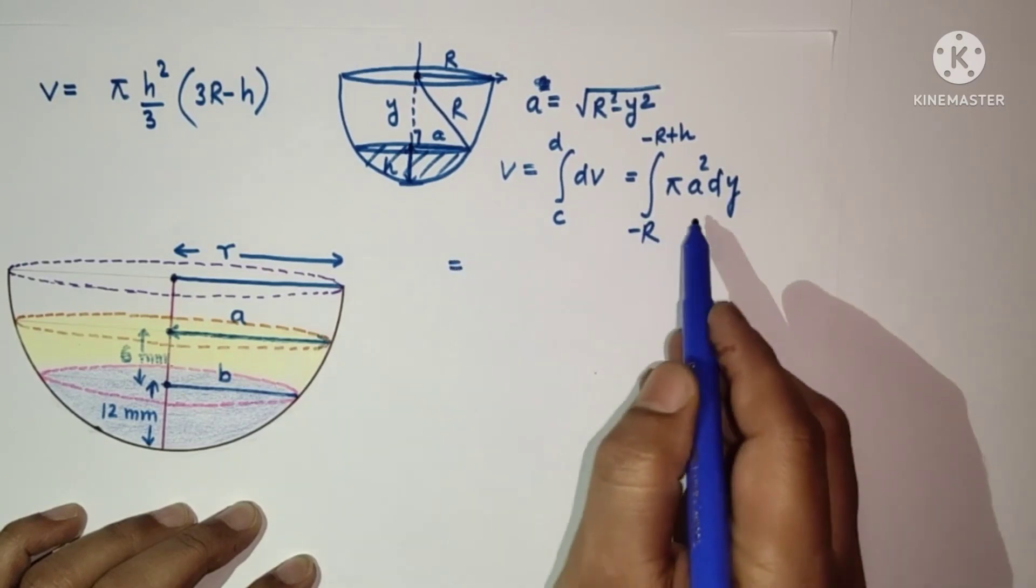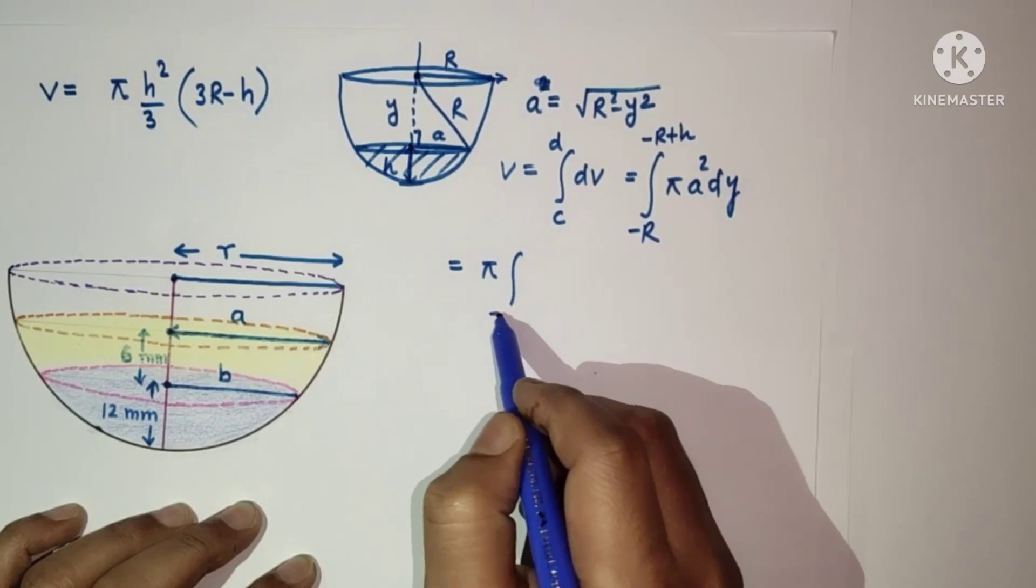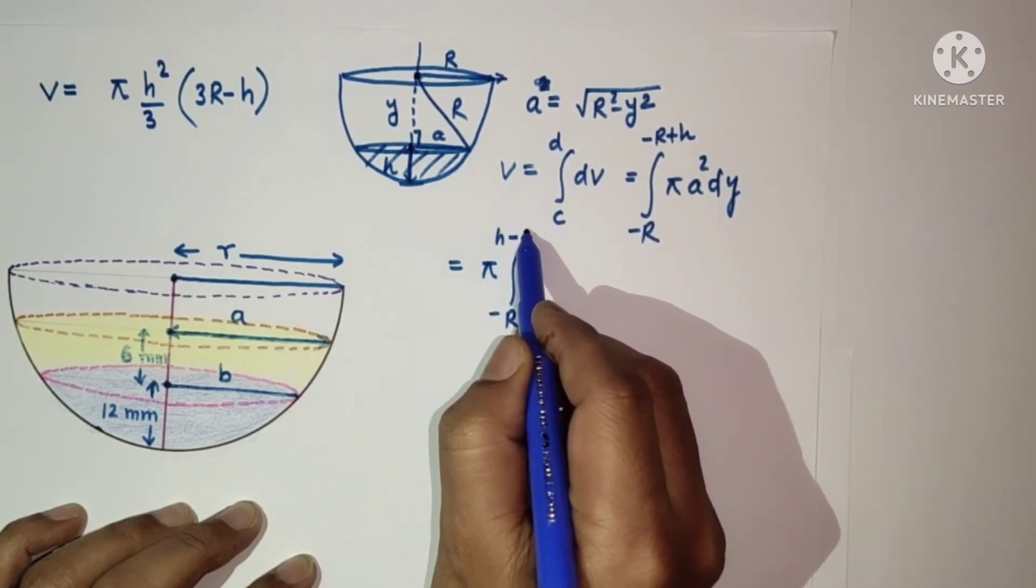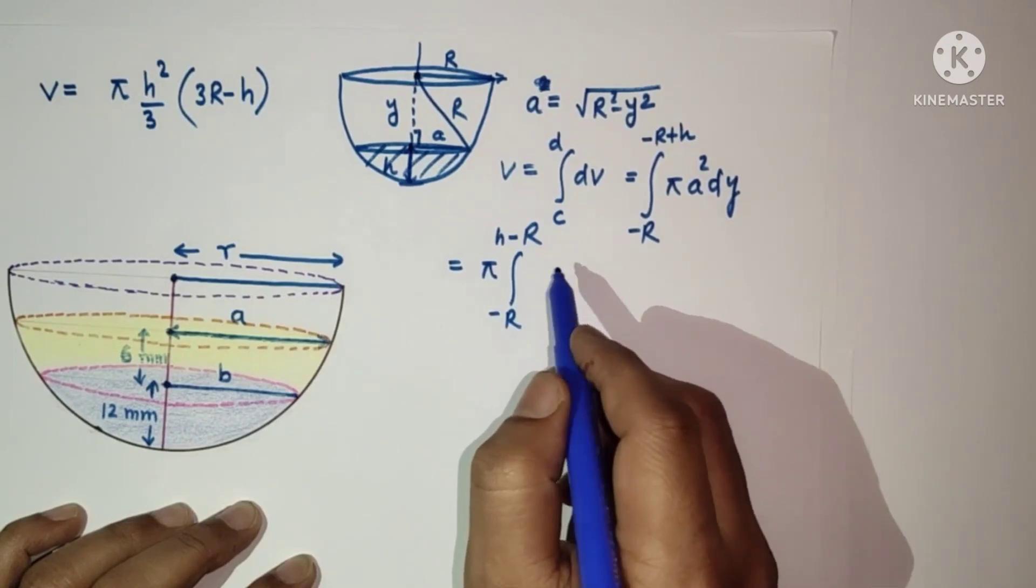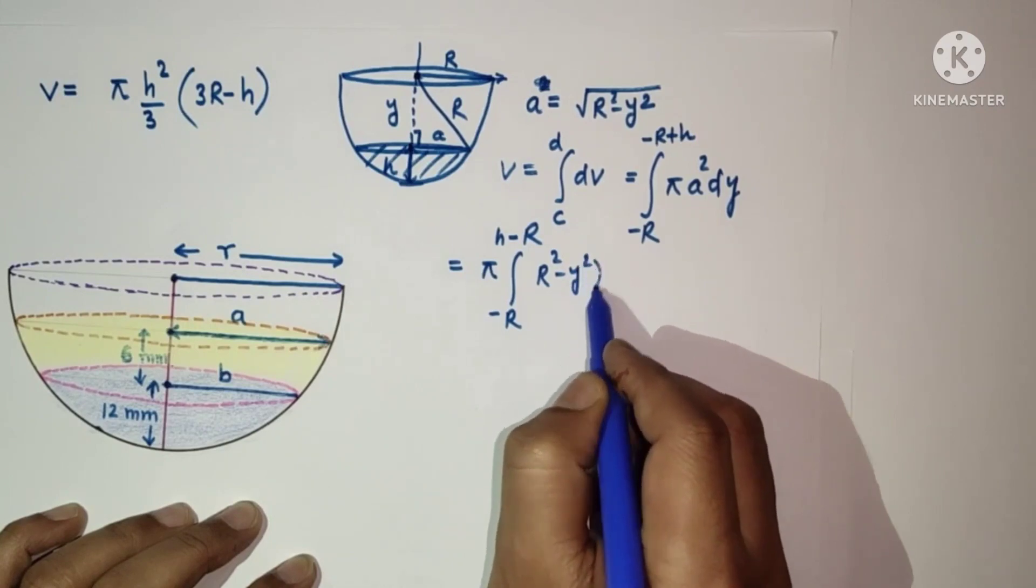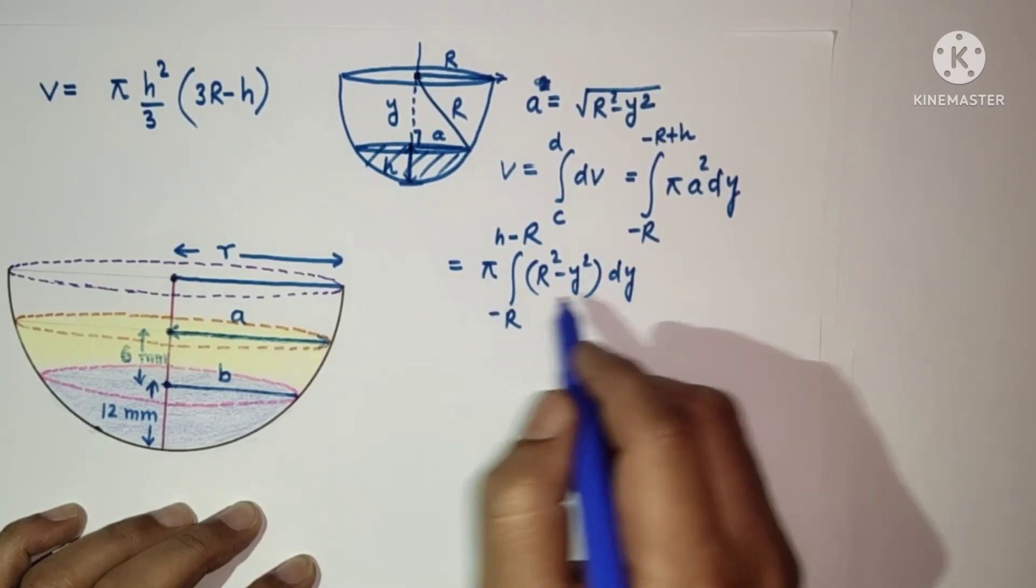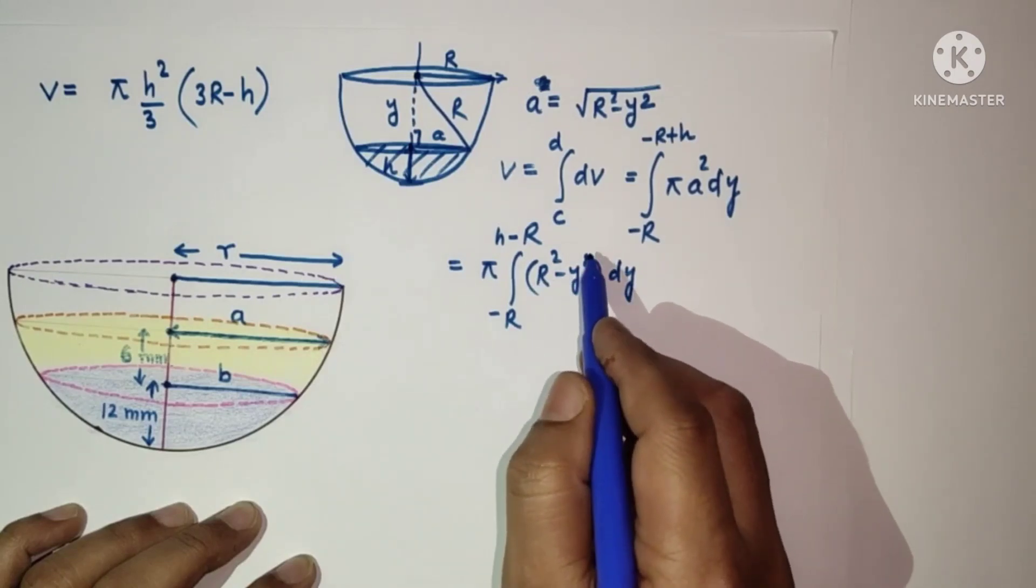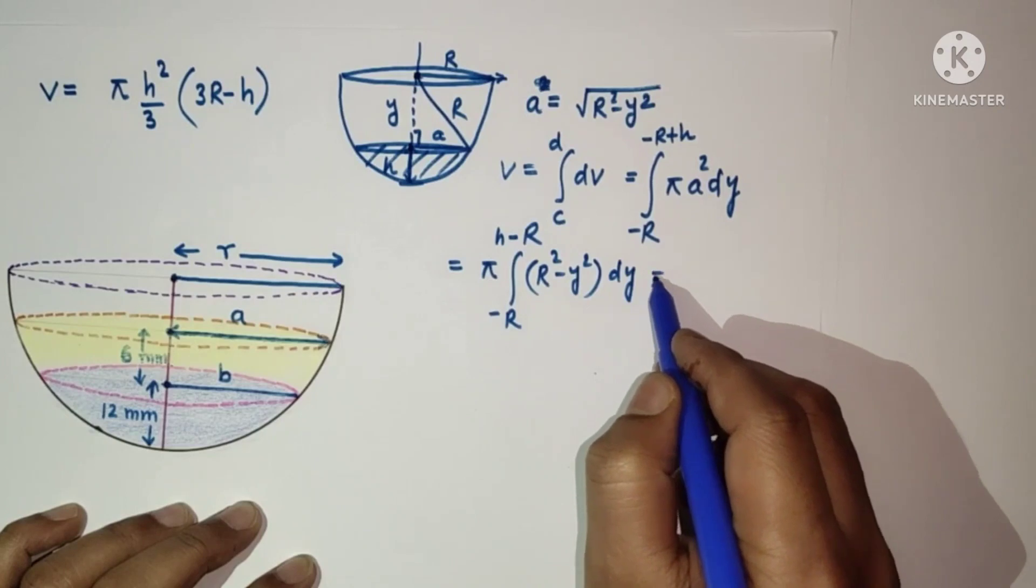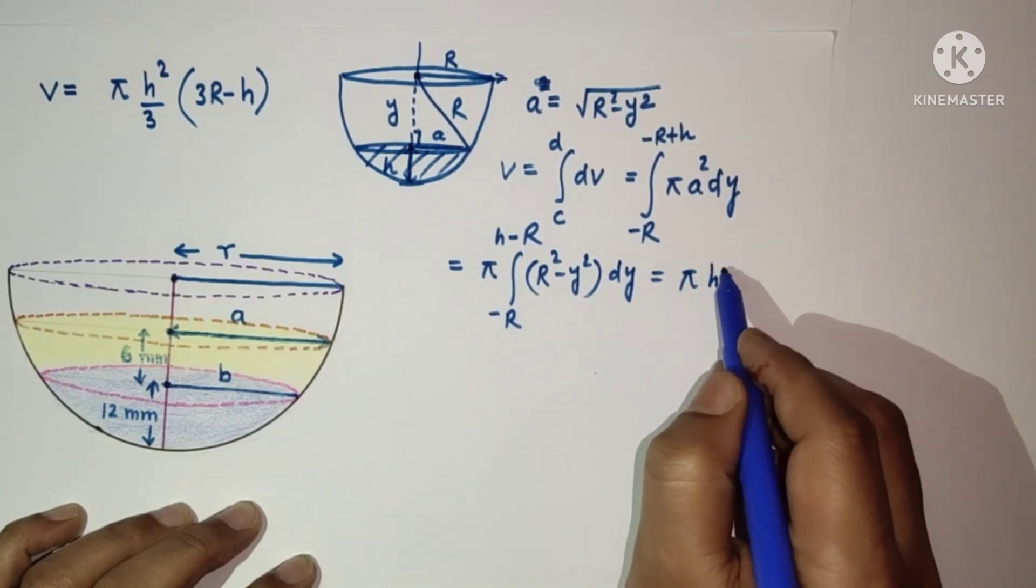We can take pi outside the integral. A squared is R squared minus Y squared dY. After integration and simplification, we get R squared Y minus Y cubed by 3. Substituting the limits, we get pi H squared by 3 times 3R minus H.